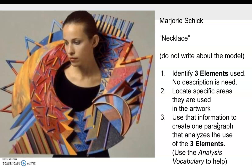So this is the artwork you're going to type an analysis paragraph about this particular piece. We're going to call it necklace. You're going to identify three dominant elements that are being used. Please do not create a description. This is an artwork by Marjorie Schick and it's titled necklace. And this is what I'm going to talk about. No, locate specific areas where those elements are being used and make sure you use the analysis vocabulary worksheet to help you out.